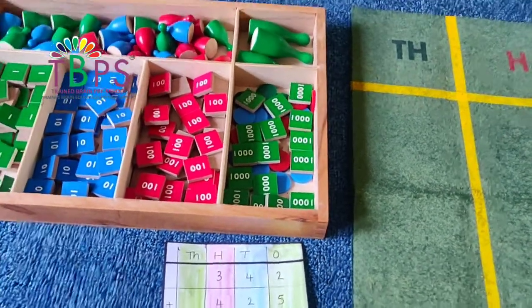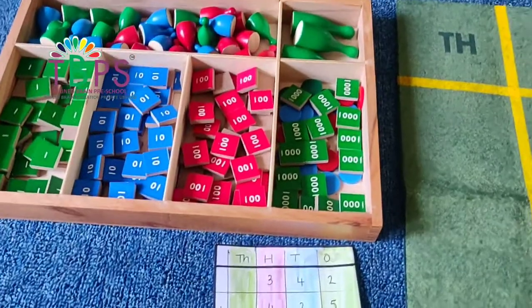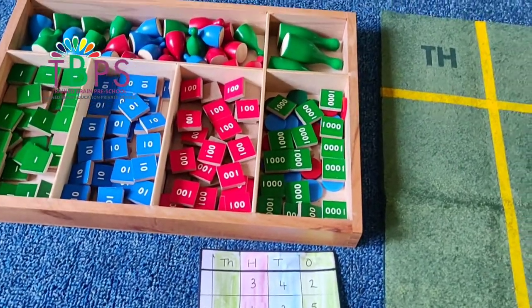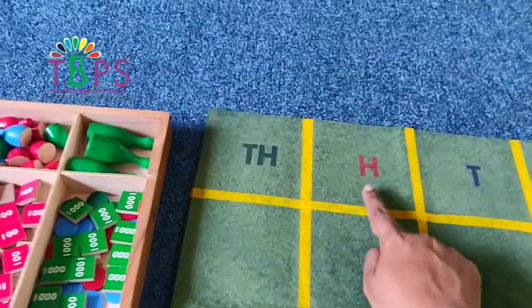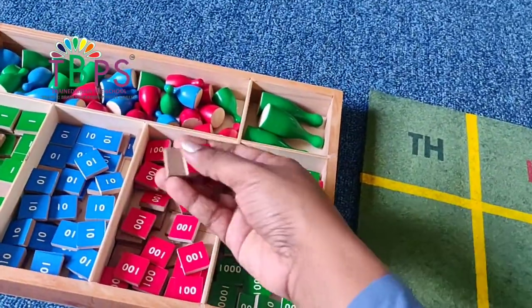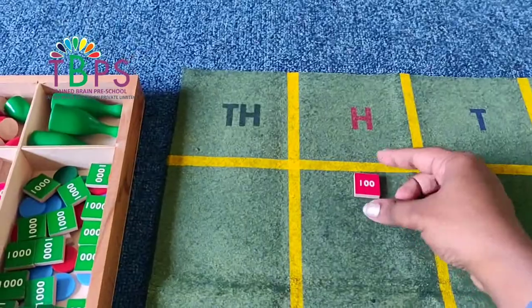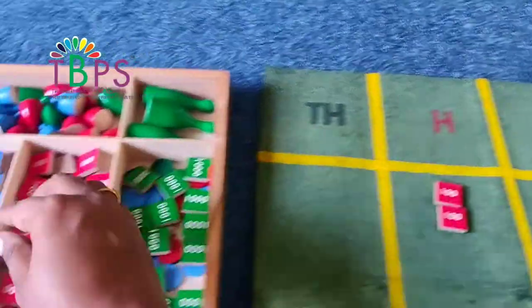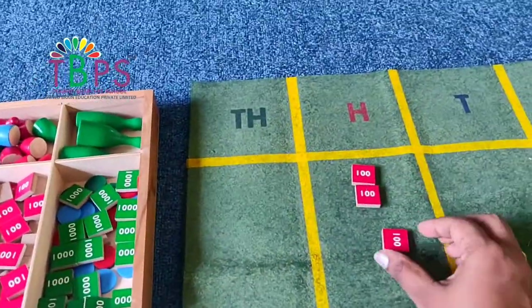So let's arrange the first number. How do we read it? We read it as three hundred and forty-two. That means we have hundreds, tens, and units. We got to place how many hundreds? Three hundreds. So I'm going to place 100, 200, 300.